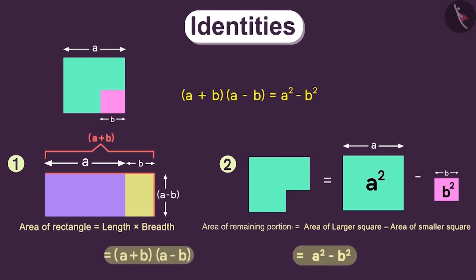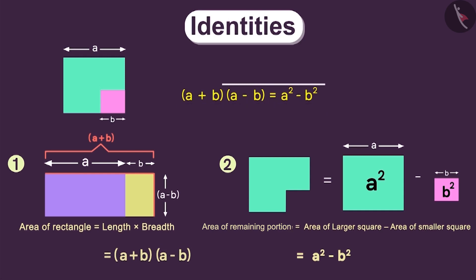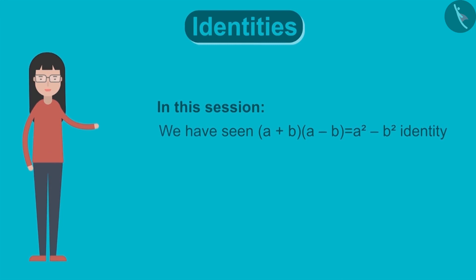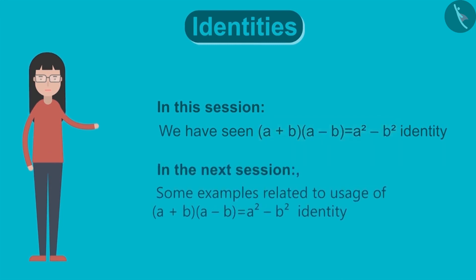Since these two expressions are equal to the area of this remaining portion, these two expressions will be equal to each other. This way, we prove this identity. So, in this session, we have seen this identity. In the next session, we will see some examples related to the usage of this identity.